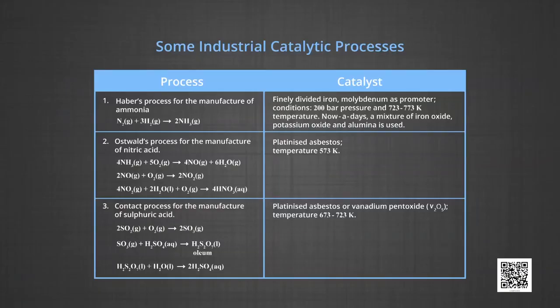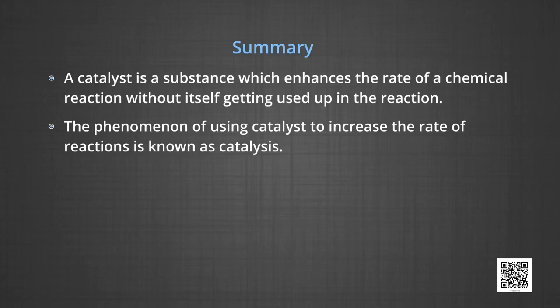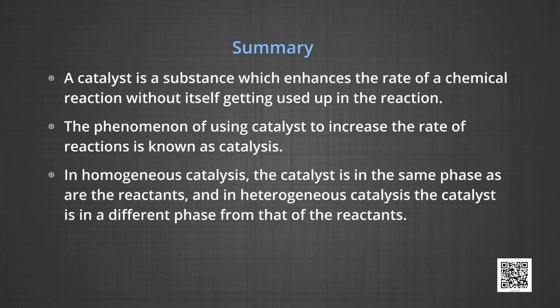We now see the applications of catalysts in industry. Some of the important technical catalytic processes are listed in the table to give an idea about the utility of catalysts in industries. To recap: a catalyst is a substance which enhances the rate of a chemical reaction without itself getting used up in the reaction. The phenomenon of using a catalyst to increase the rate of reaction is known as catalysis. In homogeneous catalysis, the catalyst is in the same phase as the reactants, and in heterogeneous catalysis, the catalyst is in a different phase from that of the reactants.